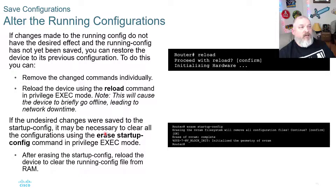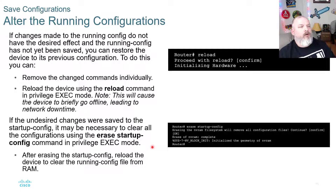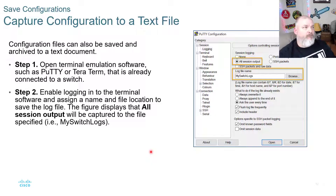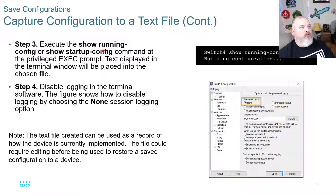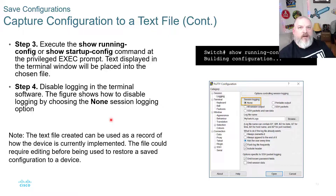If undesired changes were saved to the startup config, use 'erase startup-config' to clear all startup configurations — the next boot will give you a clean router or switch. This is used in labs: if you're using actual routers and switches, erase the startup config after your lab so the next student has a clean device. You can also capture your configuration to a text file using terminal emulation software like PuTTY or TeraTerm — enable logging, assign a filename, execute 'show running-config' or 'show startup-config', then disable logging to create a text file with all your configuration information.